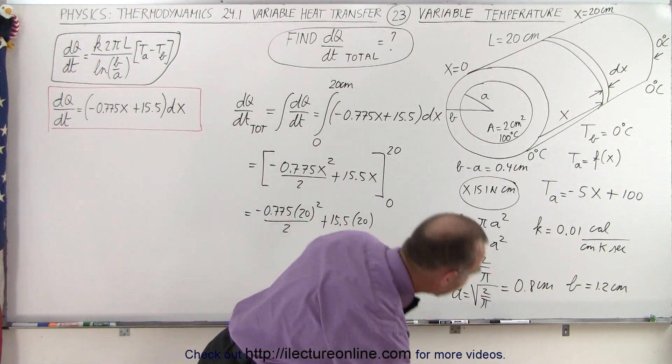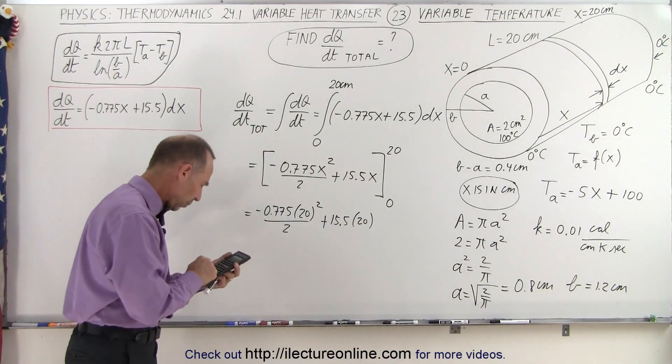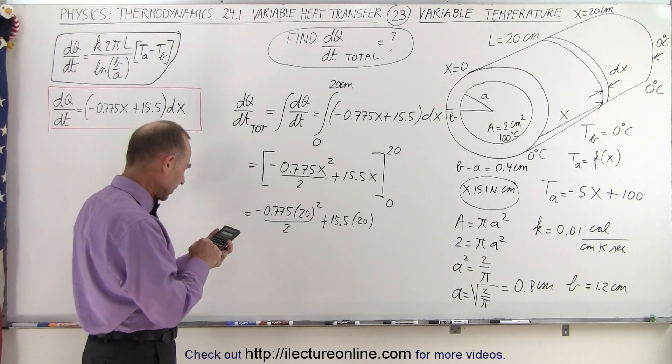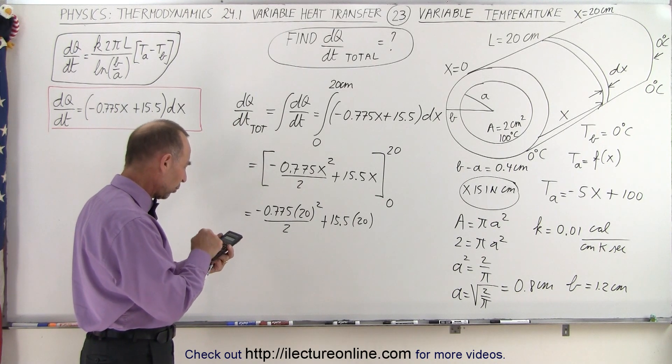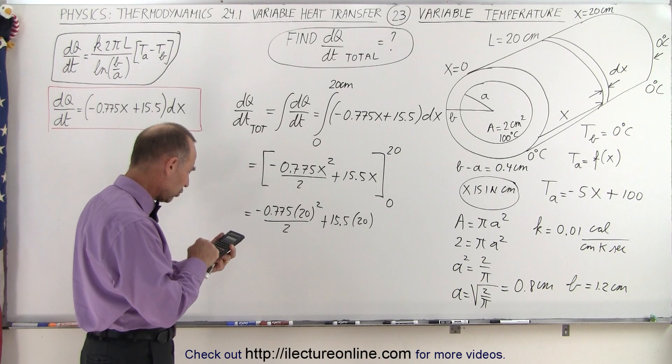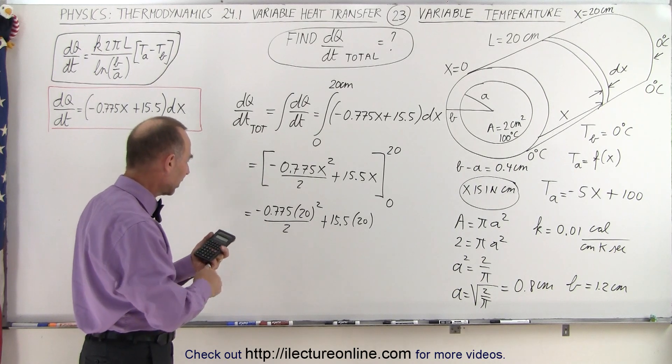So with a calculator, what do we get? 0.775 times 20 squared divided by 2, put a negative in front of that, so that gives us minus 155.